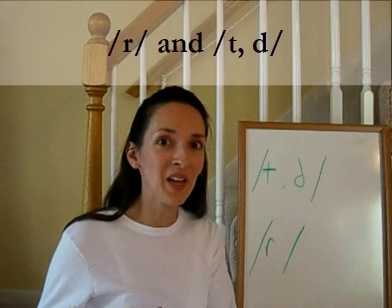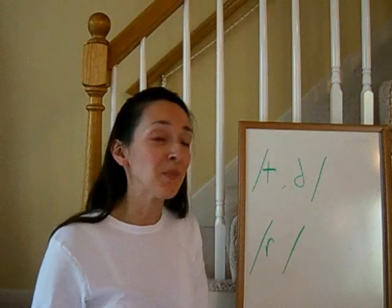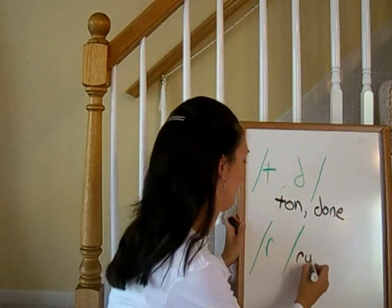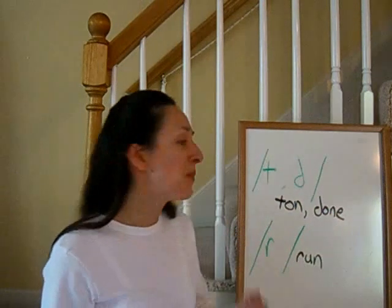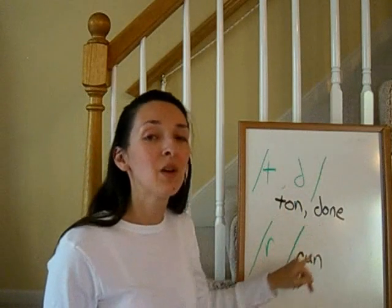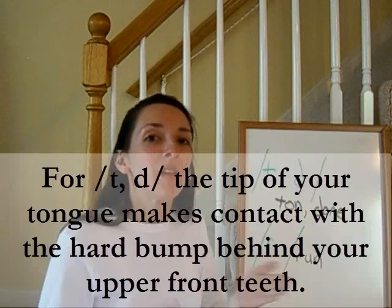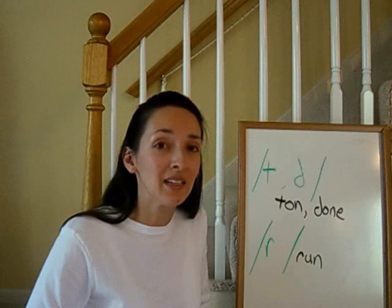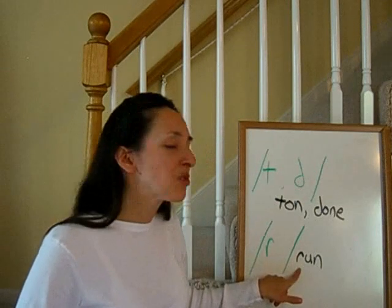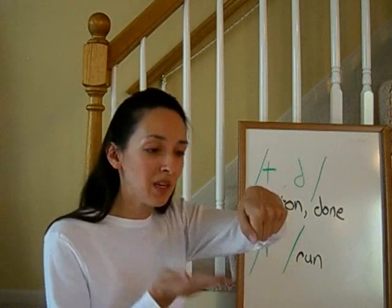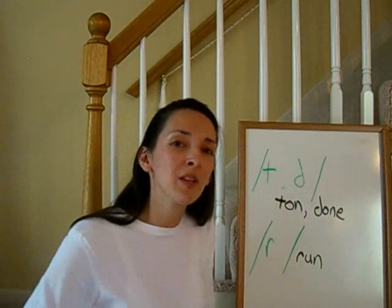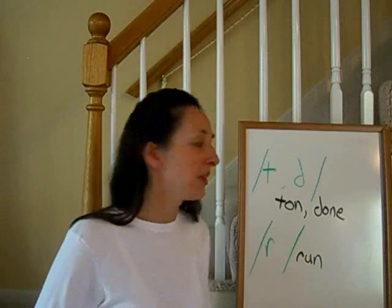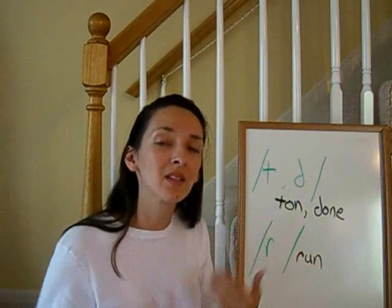Some students confuse the R sound with the T or D sound, but they are different. Let's look at some examples. These three words sound similar, but the first consonant is different: ton, done, run. With T and D, you have contact between the tip of your tongue and that hard bump behind your upper front teeth. With 'run,' you do not have contact with the tip of your tongue and that hard bump — it approaches the bump but doesn't touch. Also, the position of your lips is different. With 'run,' there's that gentle rounding: run, run, run. But with the T and D sound, your lips are more relaxed: ton, done.